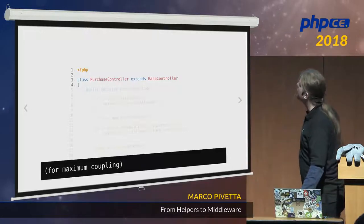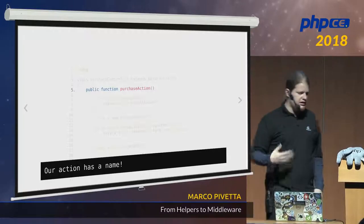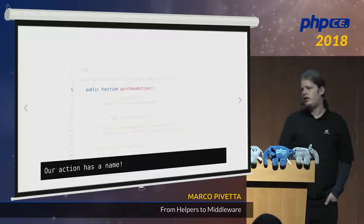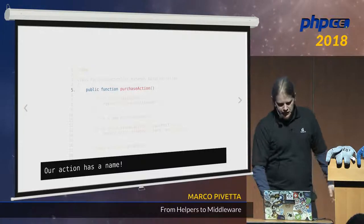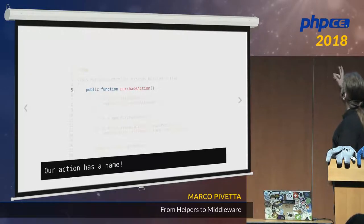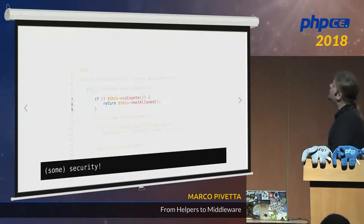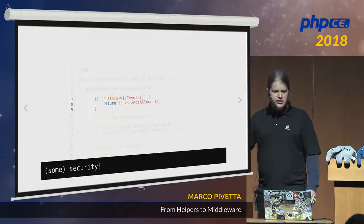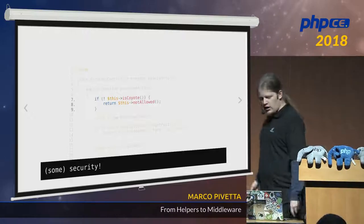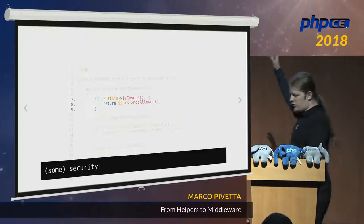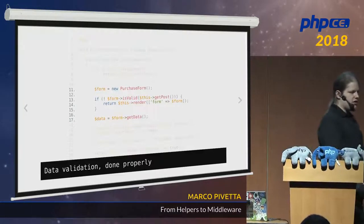It makes it compatible and easier for a junior to understand the framework and your application later. If you look at an application written with a framework back in 2008 you'd still say it's terrible, but at least you can follow it — whereas previously it was really proper garbage everywhere. Now our action has a name — we are purchasing something. It's no longer a script that includes the purchase plus the viewing plus everything else in one place. Now we have some security — this is the first call to a helper — 'isCoYote' or something — it makes a bit more sense. We can stop execution here, and by the way I used 'return' — a lot of people still used 'exit' — but this is more manageable. Then we got some data validation done relatively well.